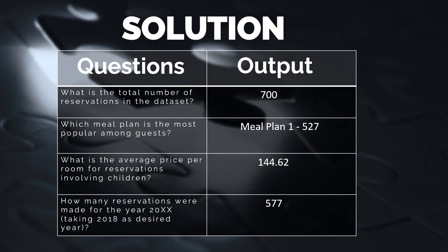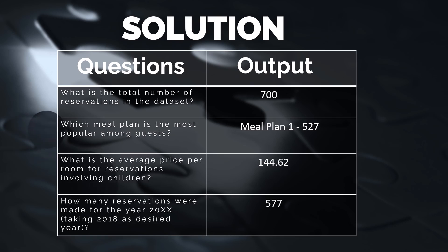Let's talk about the solutions to the questions mentioned in our overview, along with their output obtained from our SQL queries. Question 1 — total number of reservations in the dataset: answer is 700. Question 2 — most popular meal plan among guests: answer is Meal Plan 1 with 527. Question 3 — average price per room for reservations involving children: answer is 144.62. Question 4 — reservations made for the year 2018: answer is 577.